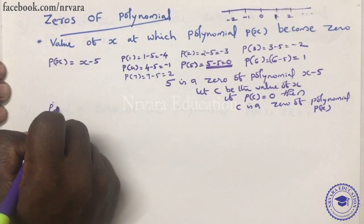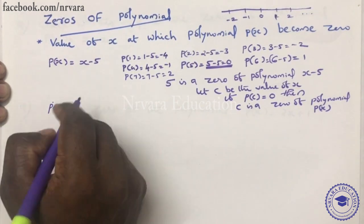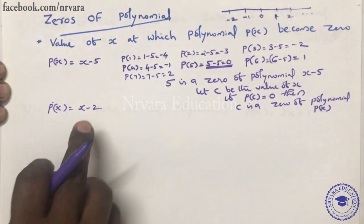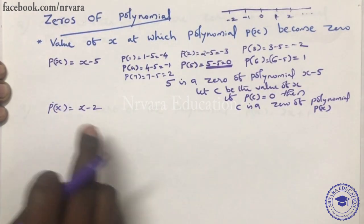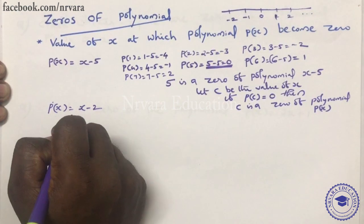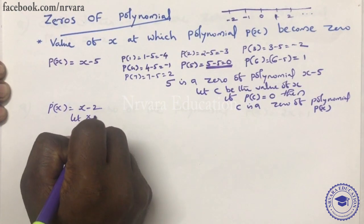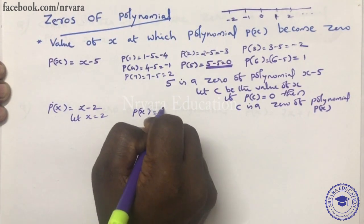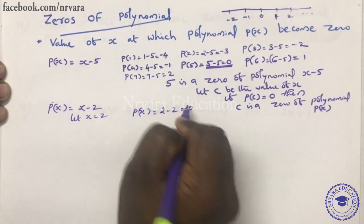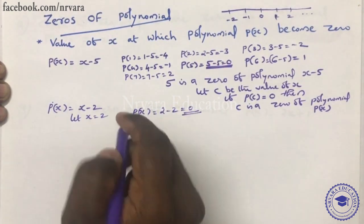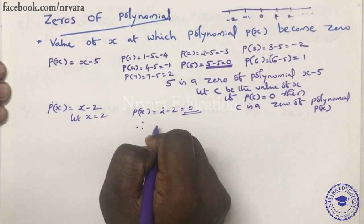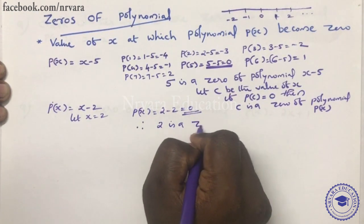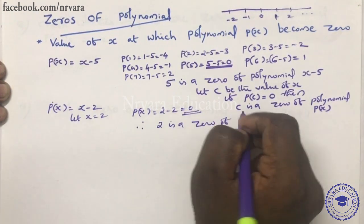Let's look at the example of P of x equal to x minus 2. If x is equal to 2, P of x is equal to 2 minus 2, that is 0. Therefore 2 is a zero of the polynomial.